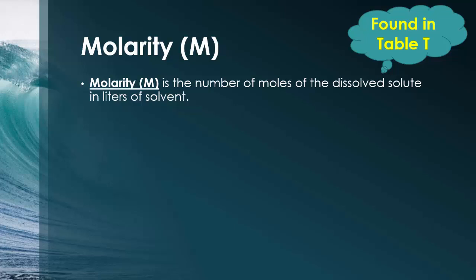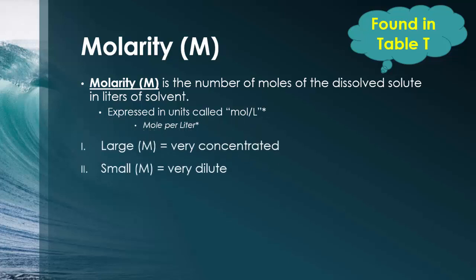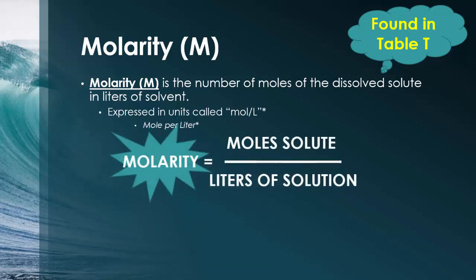Molarity is in the back of the reference tables on reference table 10. It is the number of moles of dissolved solute in a liter of solvent. Notice that's a solvent and not solution. The units are usually expressed as the capital M or moles per liter or moles divided by liter. A large molar solution is going to be very concentrated. A small molar solution or molar value is going to be very dilute. And these are just numbers. So, if you notice like 10M and you look at another number and it's like 1M, well, the 10M being a bigger number is going to say that this is more concentrated than the 1M. This is the actual formula for what molarity is. Again, on the back of the reference tables.